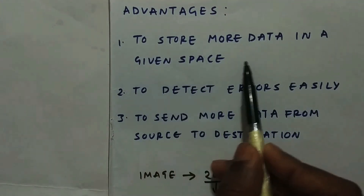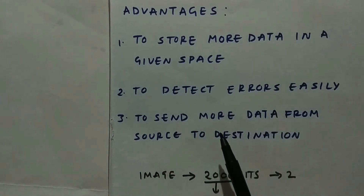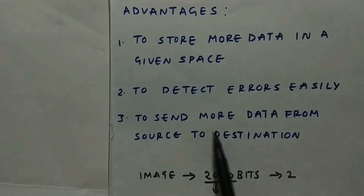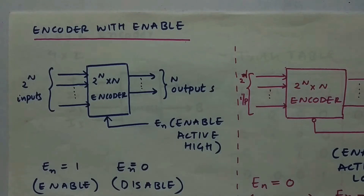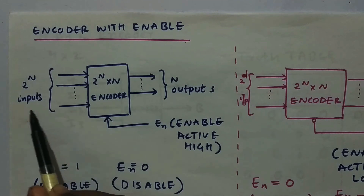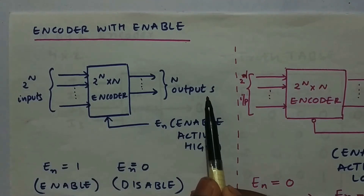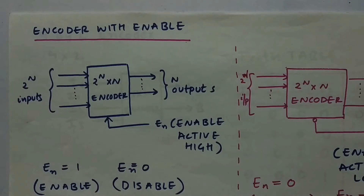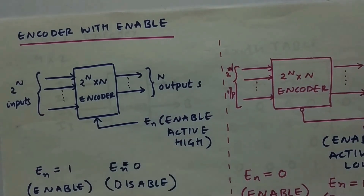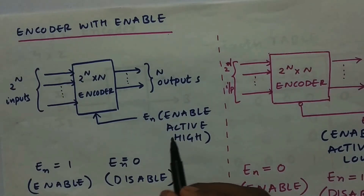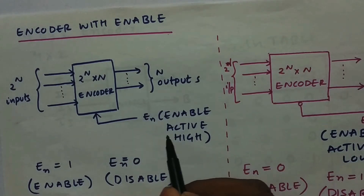These are three major advantages of encoder. First, more data in a given space. Second, error detection is easily done. Third, we can send more data from source to destination — before it was 2000 bits on a 32-bit bus taking many cycles, but 20 bits can be transferred in far fewer cycles. Now let's look at encoder with enable.